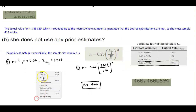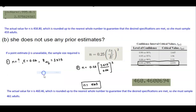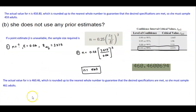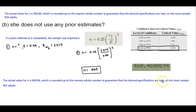To summarize Part B: the actual value for n is 460.46, which is rounded up to the nearest whole number to guarantee that the desired specifications are met. So she must sample 461 adults.